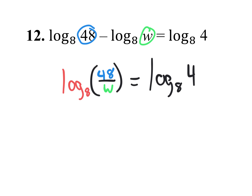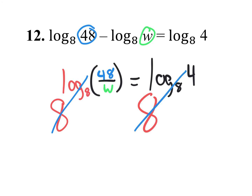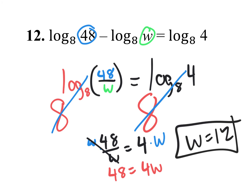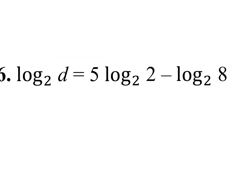Now that you have log base 8 on both sides, raise both sides to become powers of base 8 — they eliminate. You now have the simple equation 48 over W equals 4. You don't want a fraction, so multiply by W on both sides to get 48 equals 4W. Divide both sides by 4 and you get W equals 12. So we use properties to condense so you can get rid of the log once you have one single log on each side.